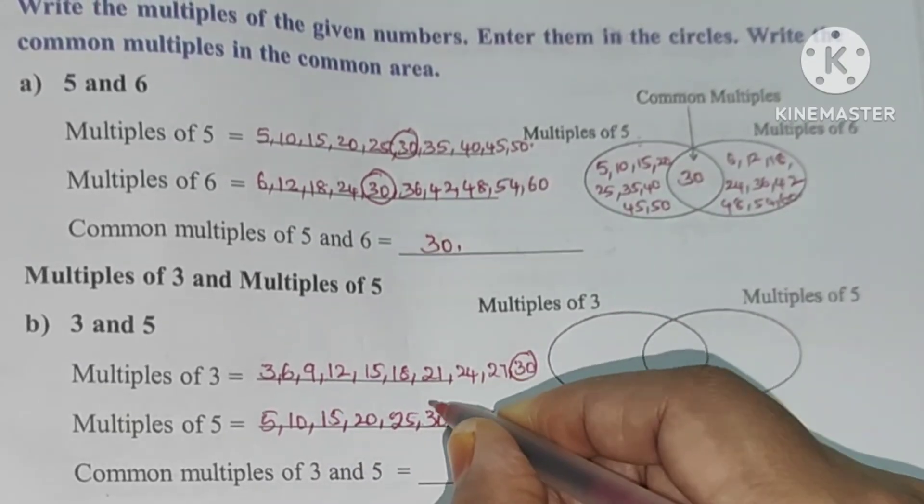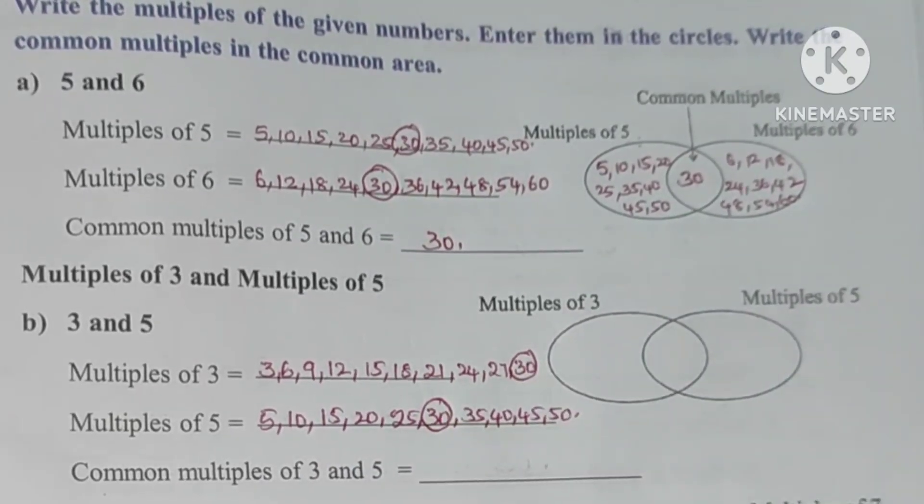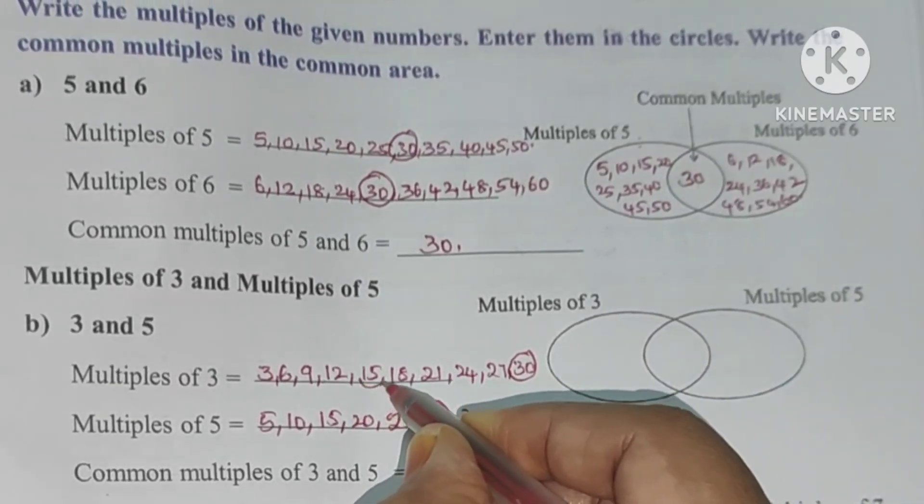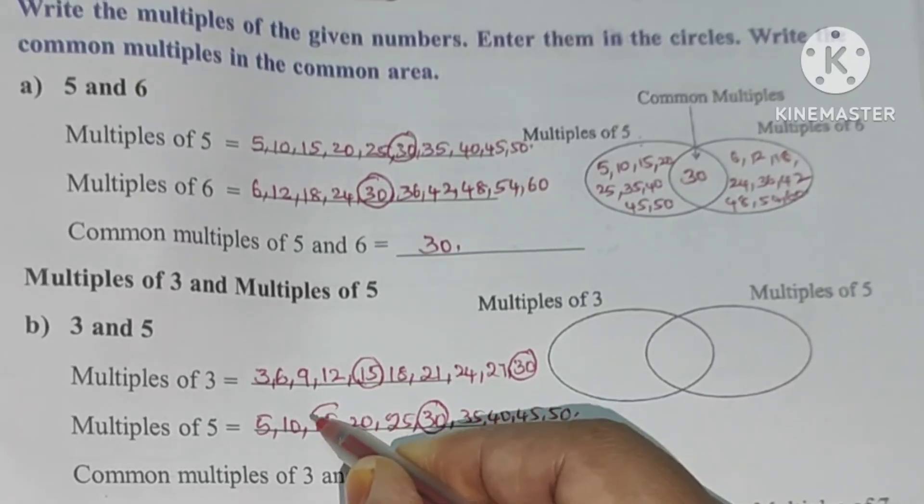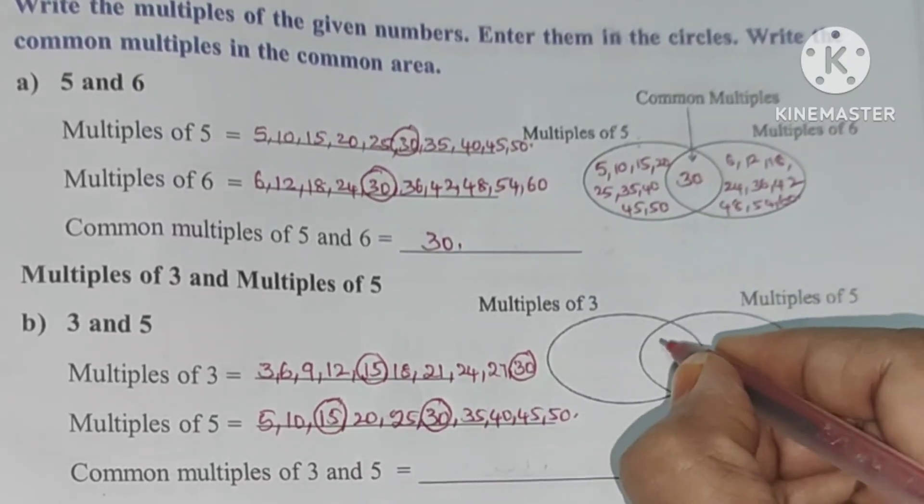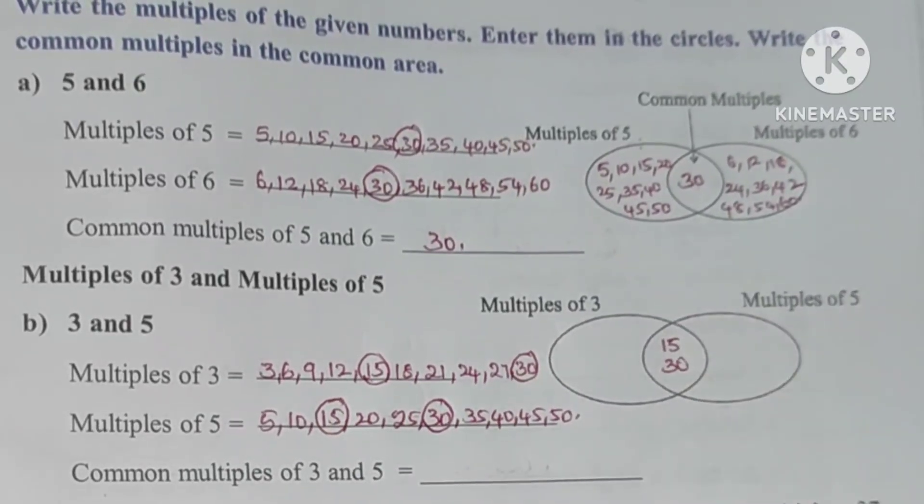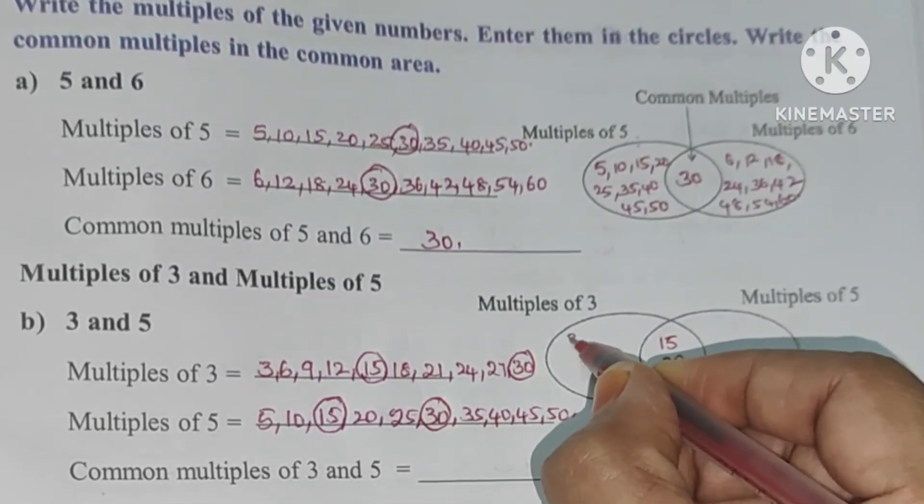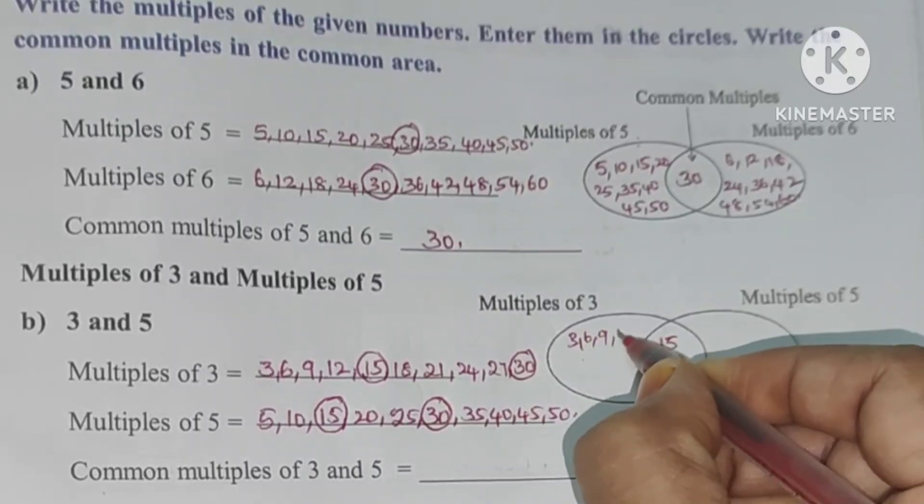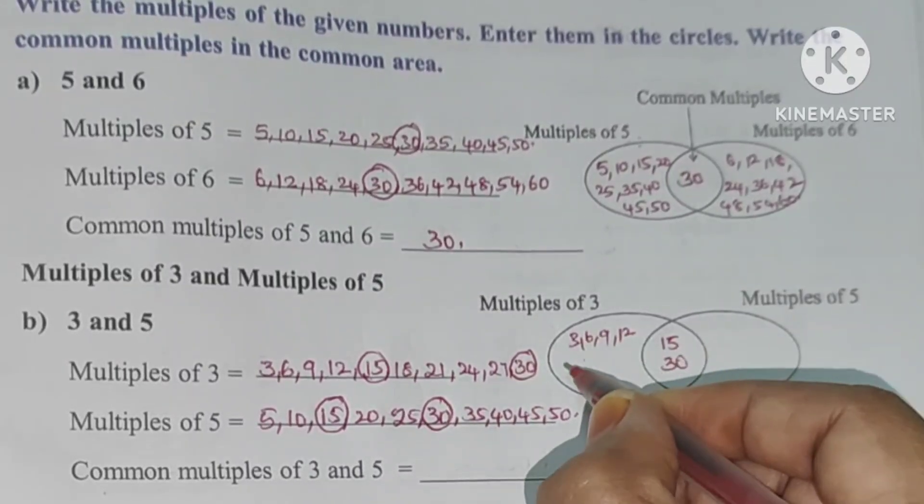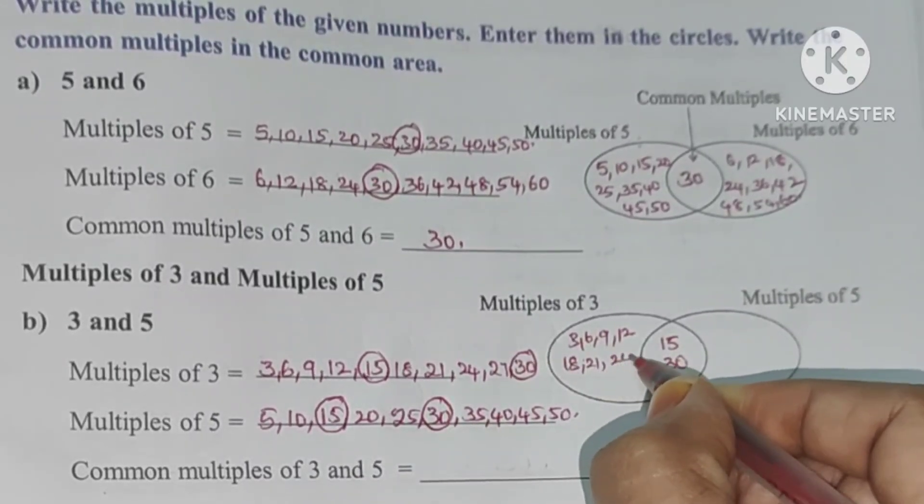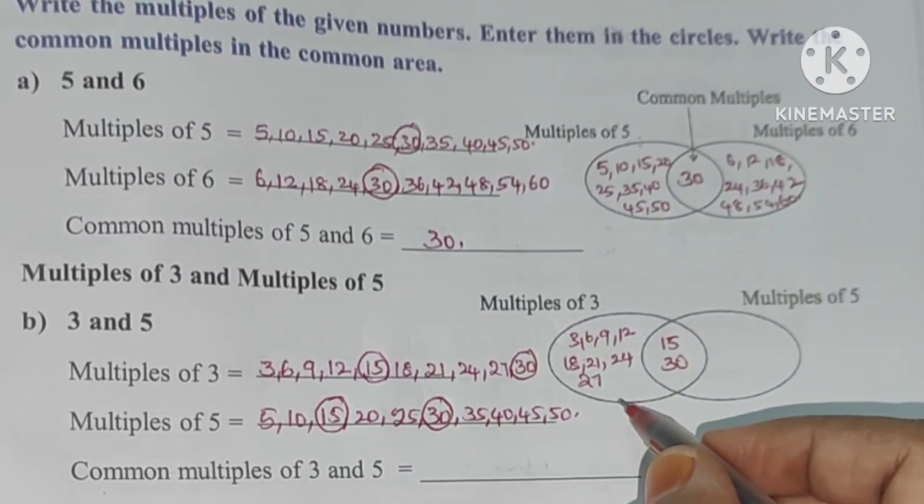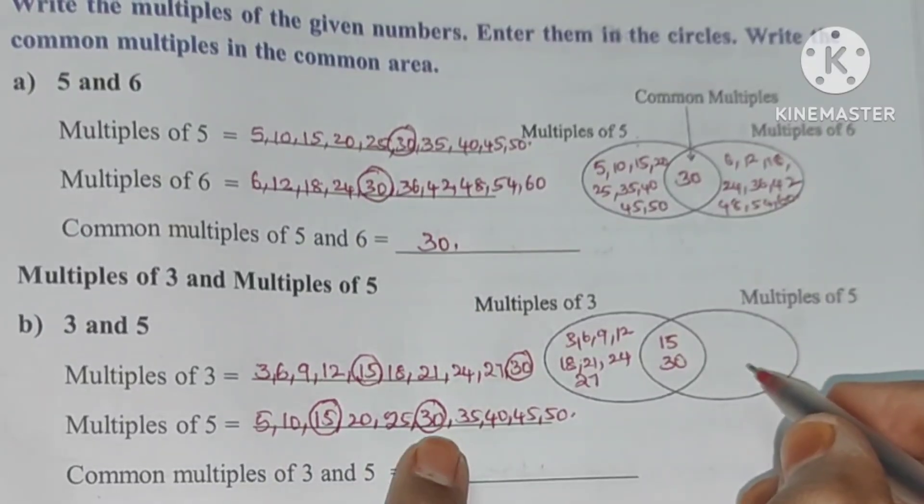Here we have 30 and 30, so here we write the common. You have 15. So here we write the common. We will write the 5 table.